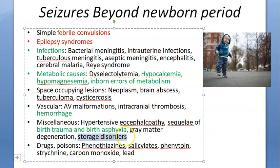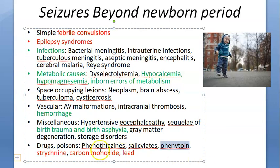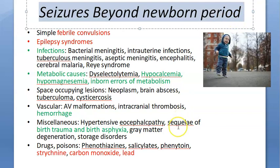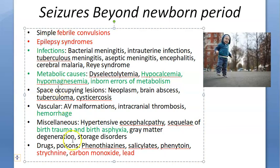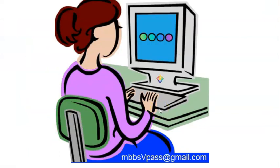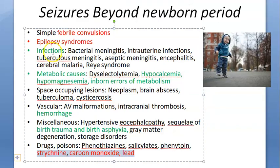New causes beyond the neonatal period include gray matter degeneration, storage disorders, and drugs or poisons — salicylates, phenothiazines, strychnine poisoning, carbon monoxide poisoning, and lead. So the additional causes post-neonatal are febrile convulsions, epilepsy syndromes, poisoning, and gray matter/storage disorders. Everything else is shared.